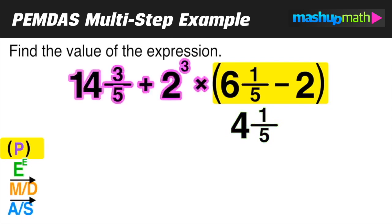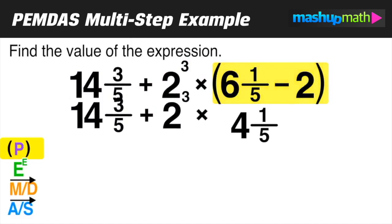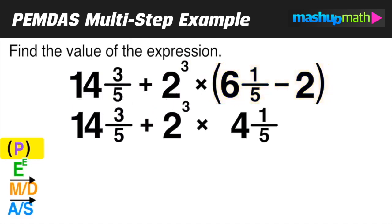Now we'll take the rest of the expression that was outside the parentheses and bring it down, and move on to step two, which is evaluating the exponents. In this case, we only have one, and that's 2 raised to the third power, which equals 8.